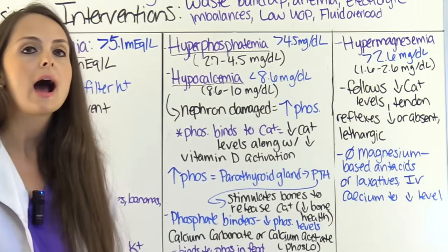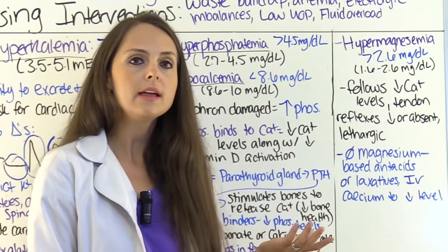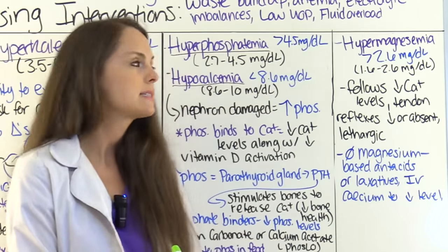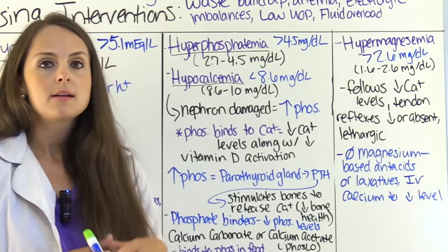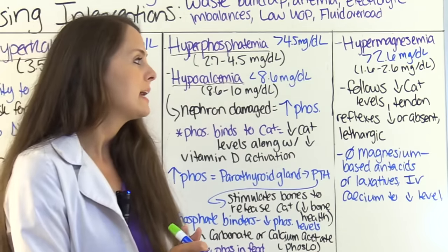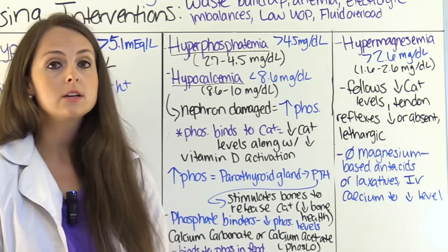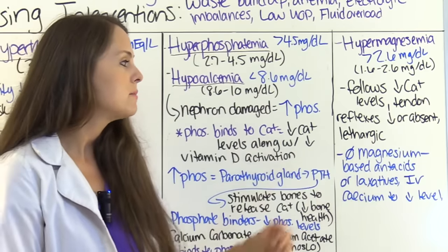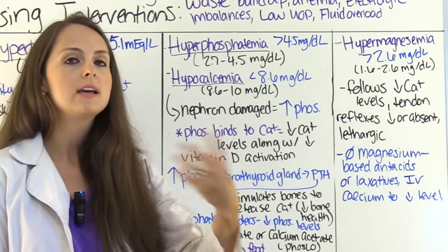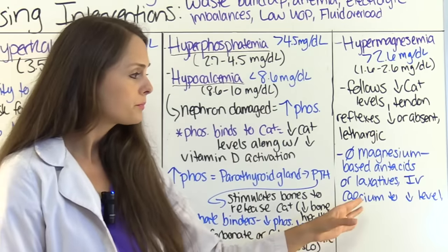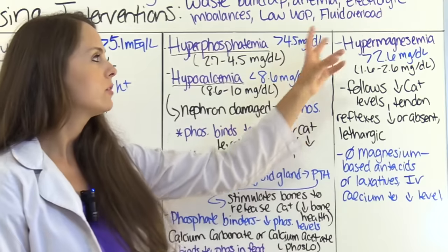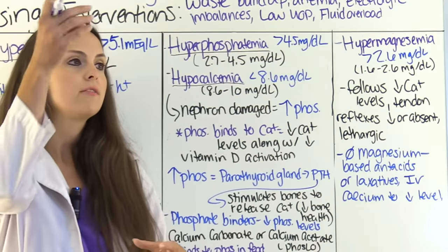Patients are also at risk for hypermagnesemia — magnesium greater than 2.6 mg/dL (normal 1.6–2.6 mg/dL) — which is often associated with low calcium levels. Signs include diminished or absent tendon reflexes and lethargy. Do not give magnesium-based antacids or laxatives, as this adds more magnesium. Restrict foods high in magnesium. The physician may order IV calcium to help decrease the magnesium level, since replenishing calcium will bring magnesium back toward normal.